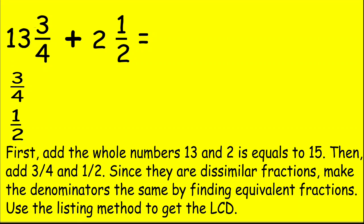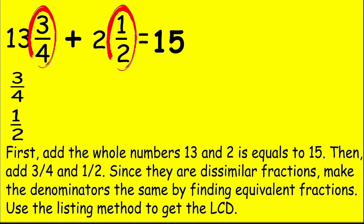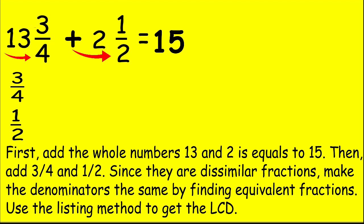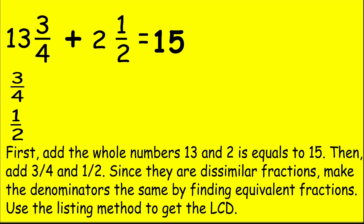For example, let's add 13 and 3/4 plus 2 and 1/2. First, add the whole numbers: 13 and 2 equals 15. Then, add 3/4 and 1/2. Since they are dissimilar fractions, make the denominators the same by finding equivalent fractions. Use the listing method to get the LCD.